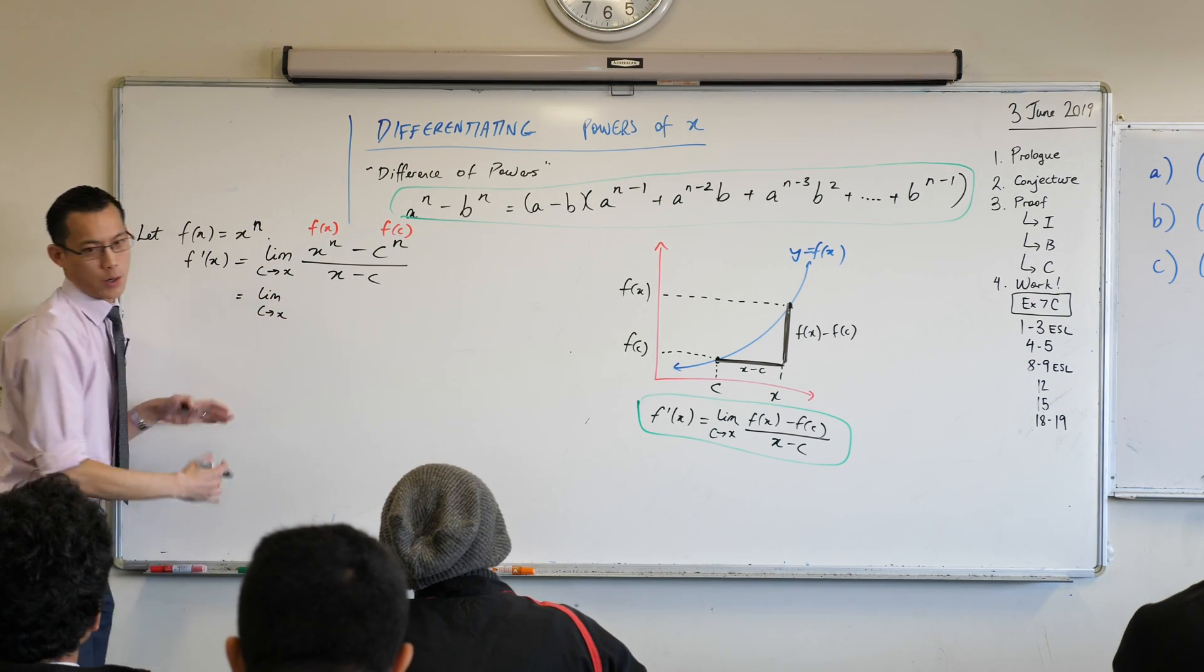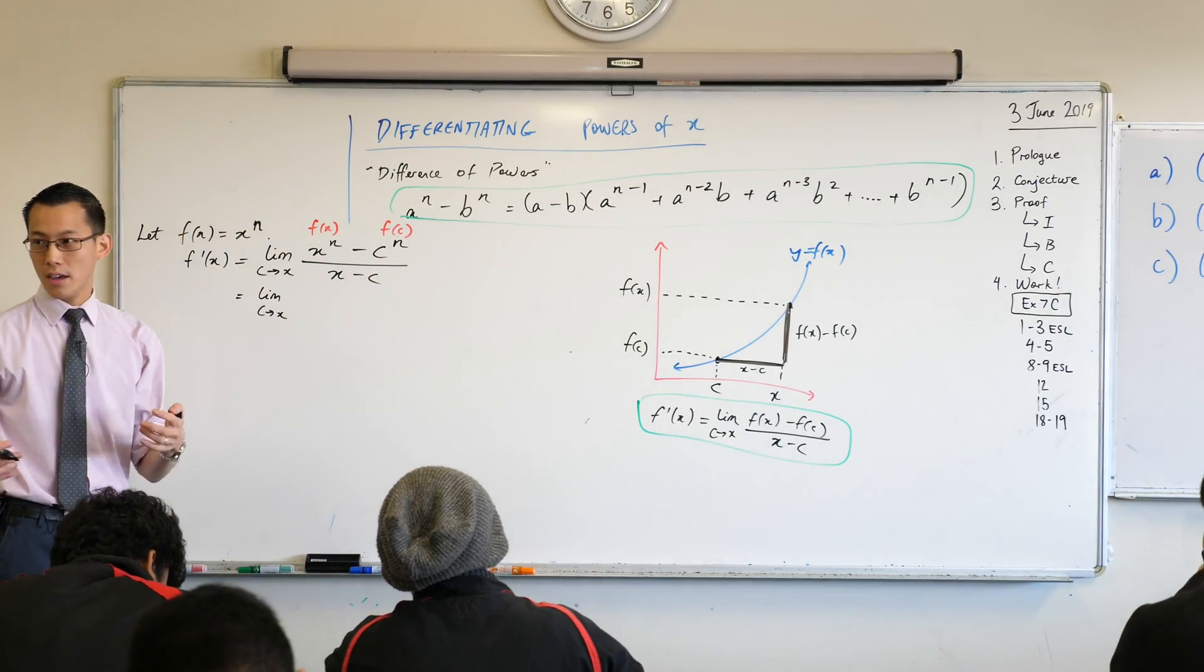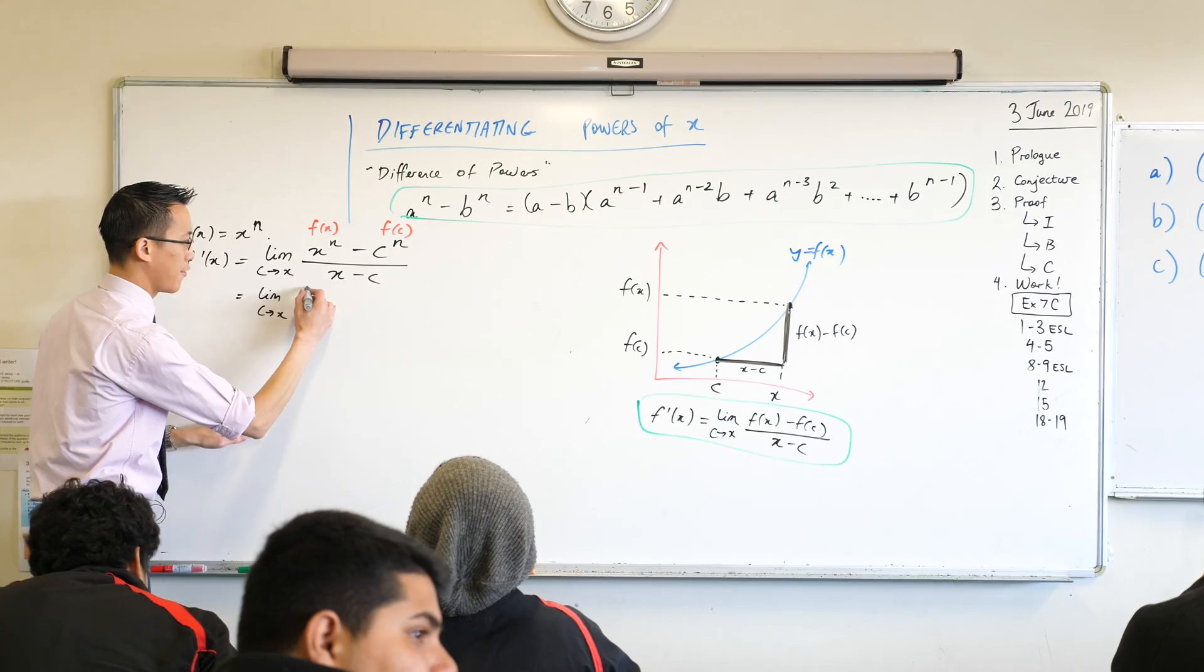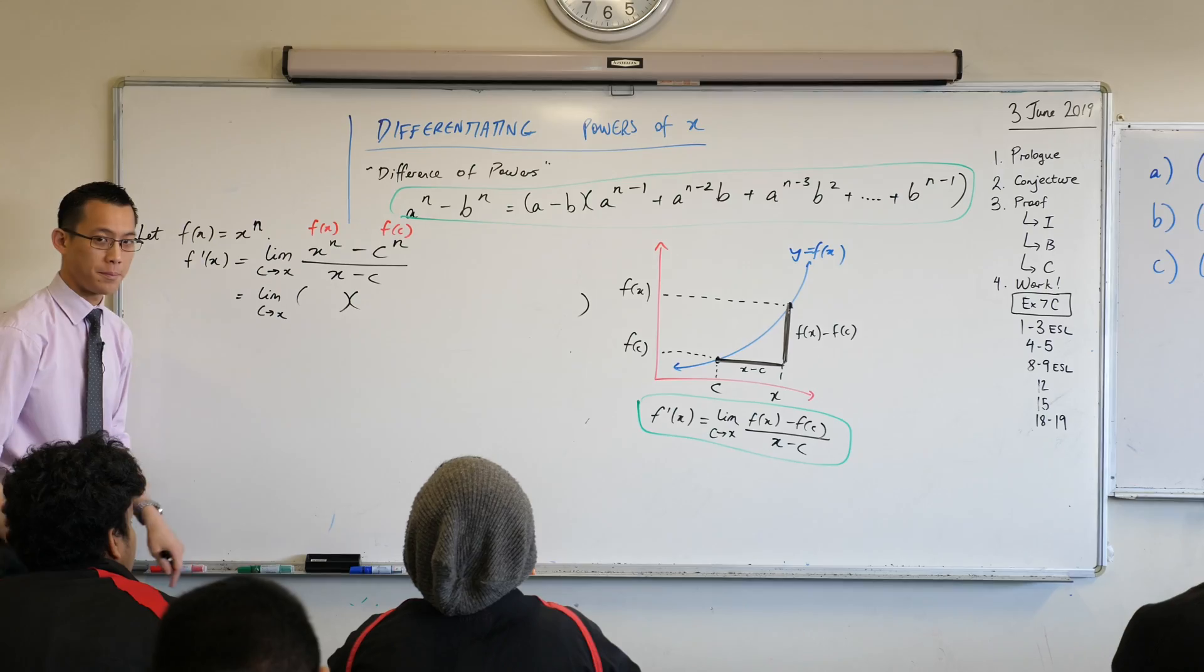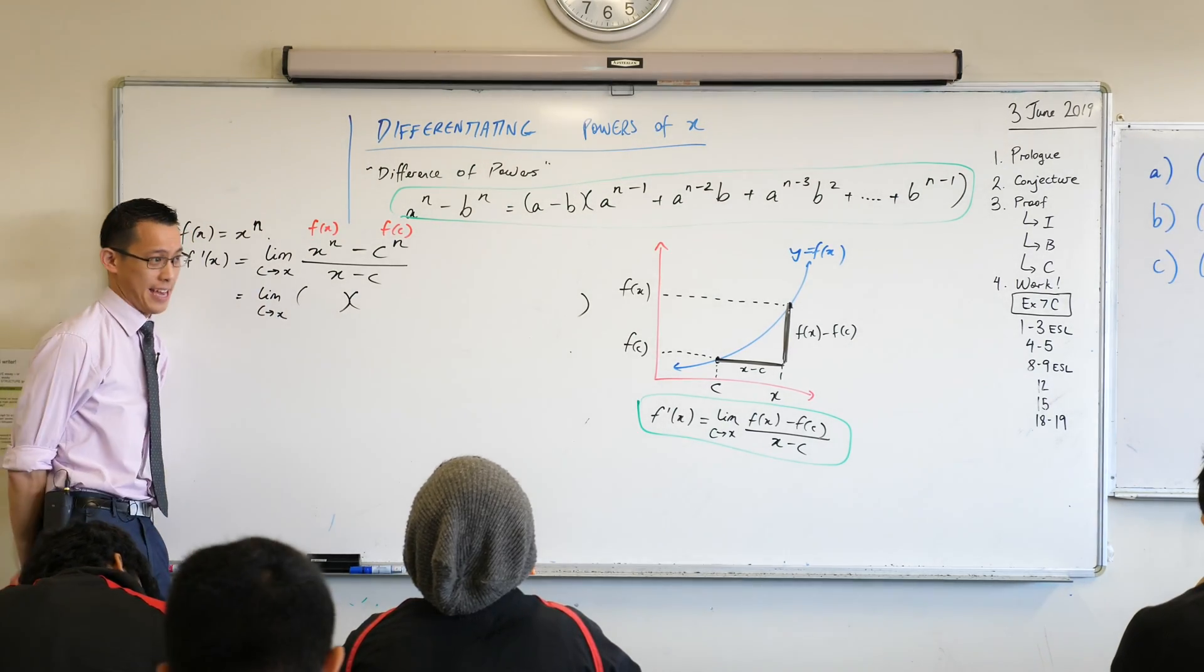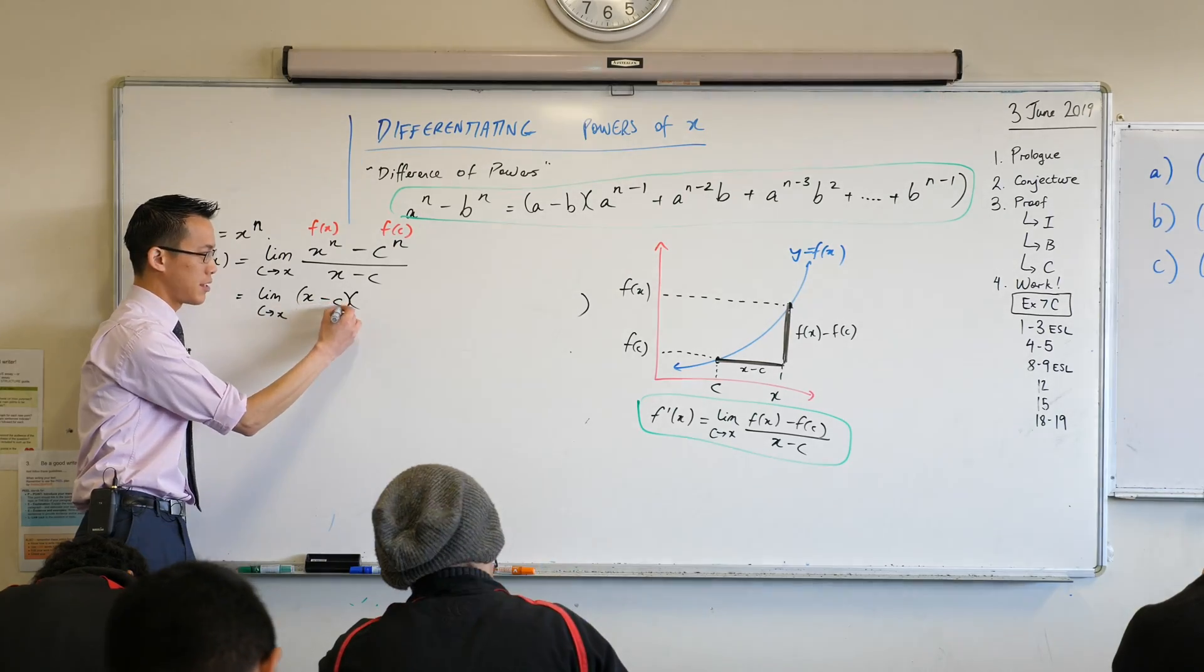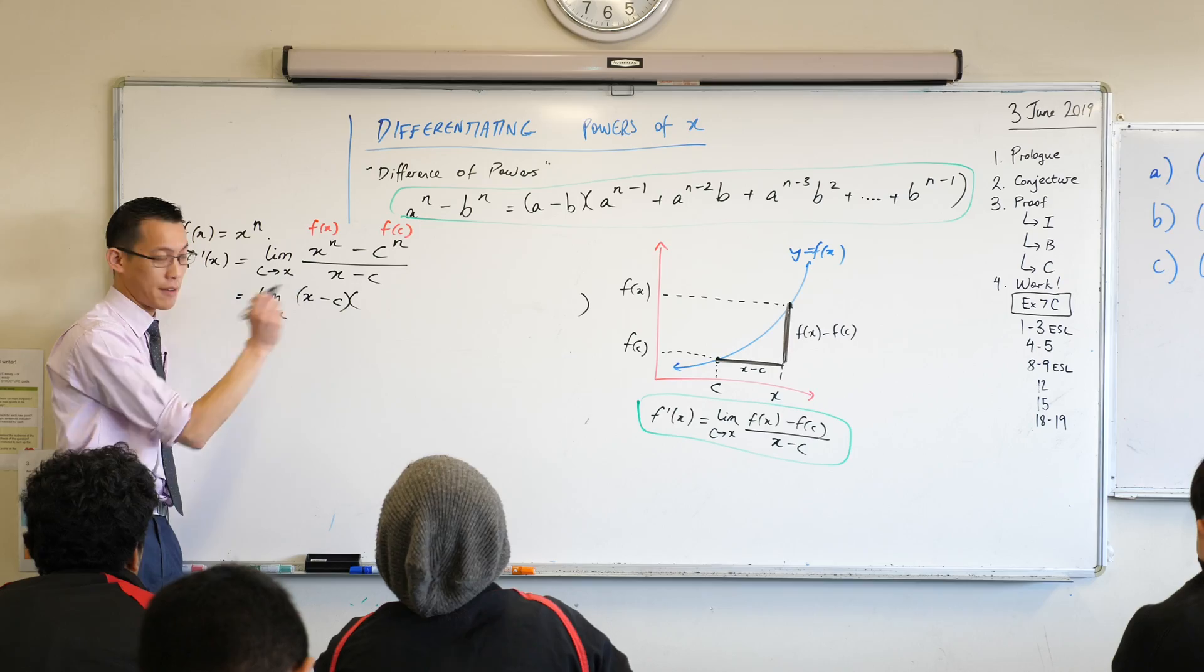Now, we went through all this algebraic work over here so that we can come up with this long result. It looks really gross right now. But when we work with it here, you're going to see it's going to come out beautifully. Watch what happens. Limit as c approaches x. Now, this guy here, before we did our work this morning, there's nothing you can do with that. But you know how to factorize this now, right? So I'm going to have these little brackets at the front, and then these really long brackets at the end. What's in the front? It'll be a minus b. But what are my a and b in this case? They are x and c. So instead of writing a minus b, I'm going to write x minus c. That's not a coincidence, is it?